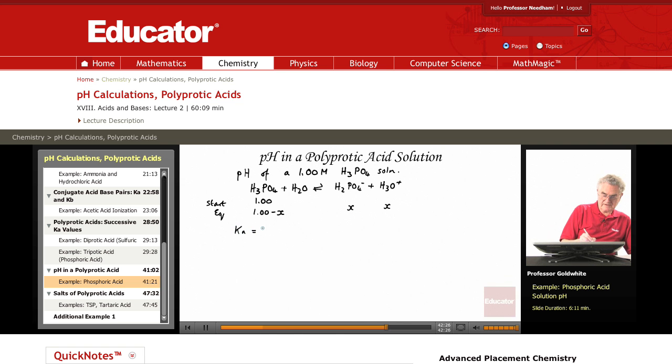Ka equals 7.5 times 10 to the negative 3 equals x squared over 1.00 minus x. Now let's try our usual approximation, although I warned you it's not going to work very well. But still, let's try it. If x is much less than 1.00, this is easy to solve.